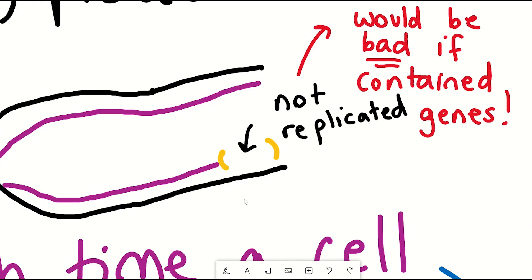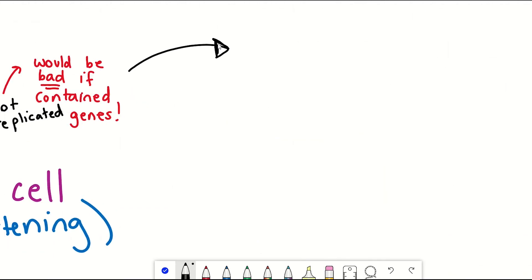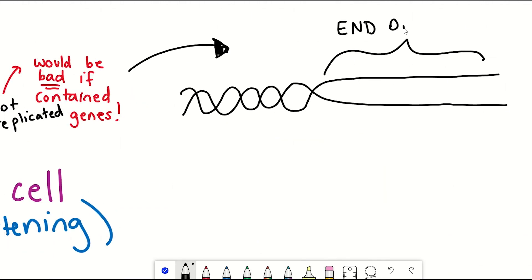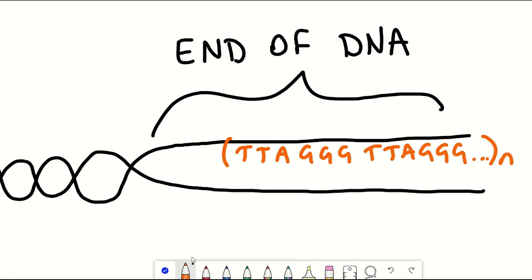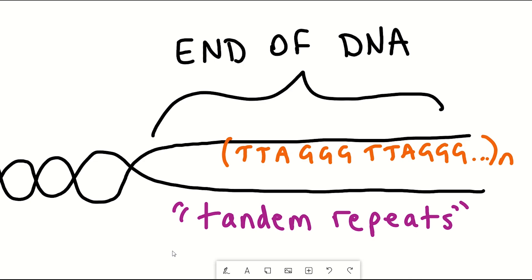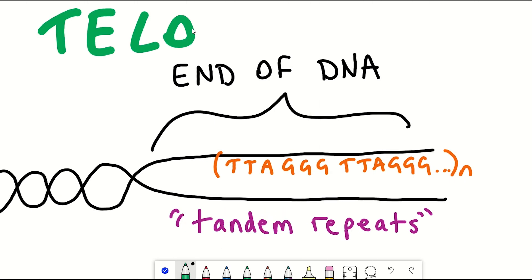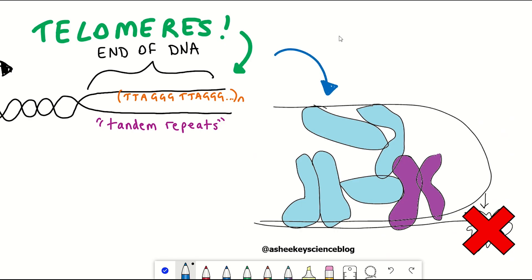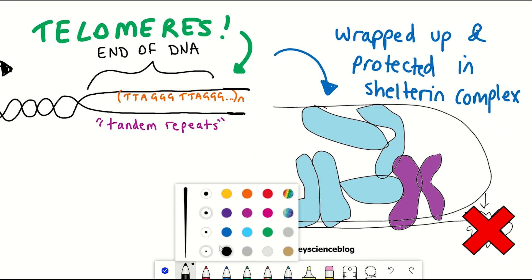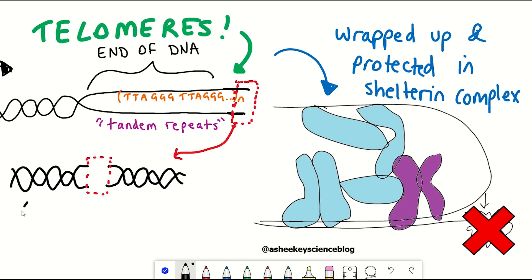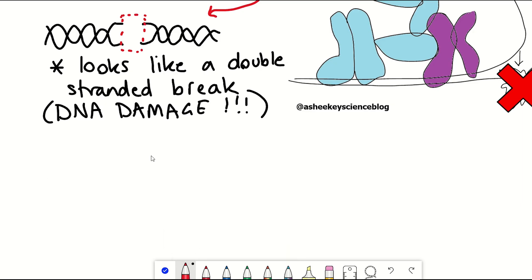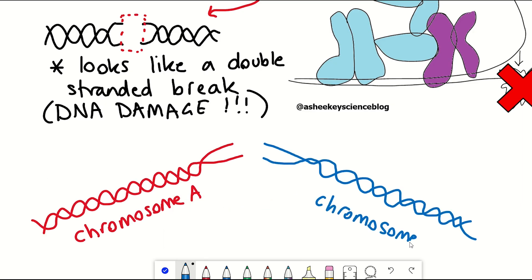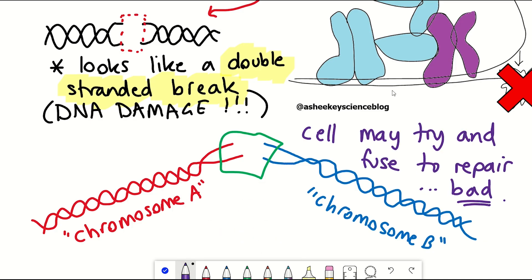This results in progressive chromosomal shortening, which would be particularly bad if the ends of chromosomes contained genes important for cell survival. But instead, what's at the ends of DNA are tandem repeats of six-nucleotide sequences. In humans, the sequence is TTAGGG. These repetitive sequences are wrapped up in a protein complex called shelterin, which hides the ends of DNA from the DNA damage response machinery that would otherwise recognise them as double-stranded breaks and fuse ends together aberrantly.